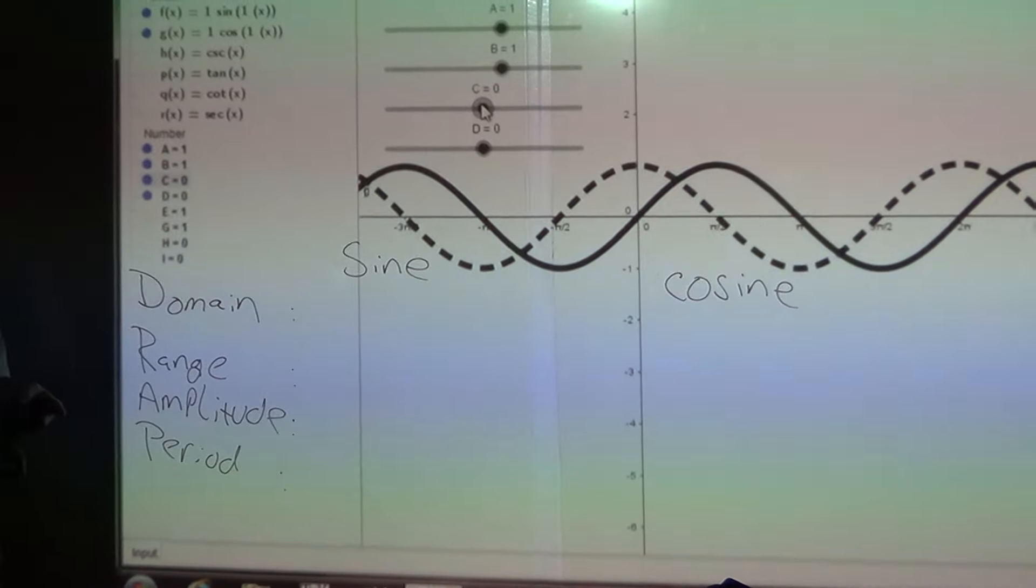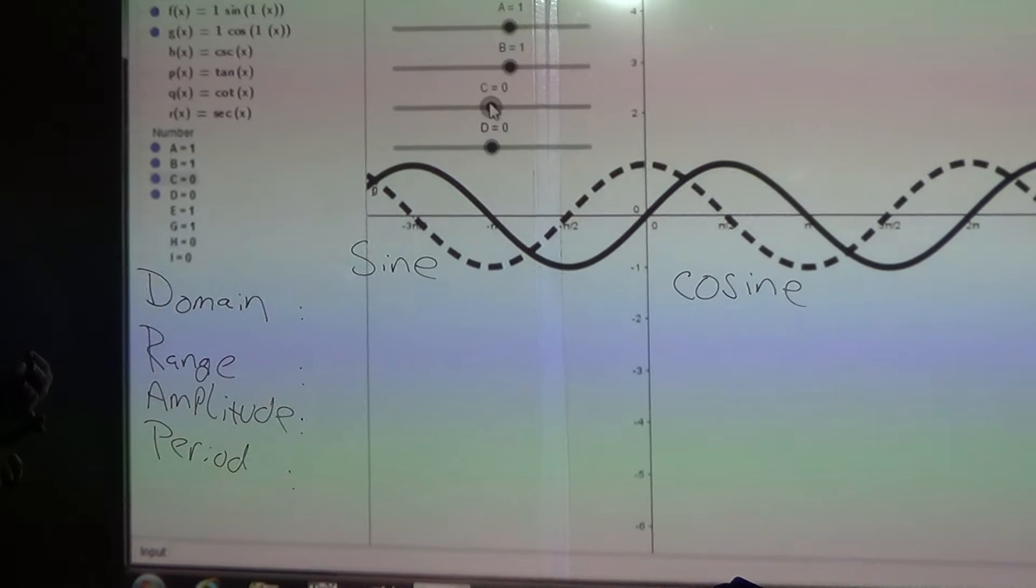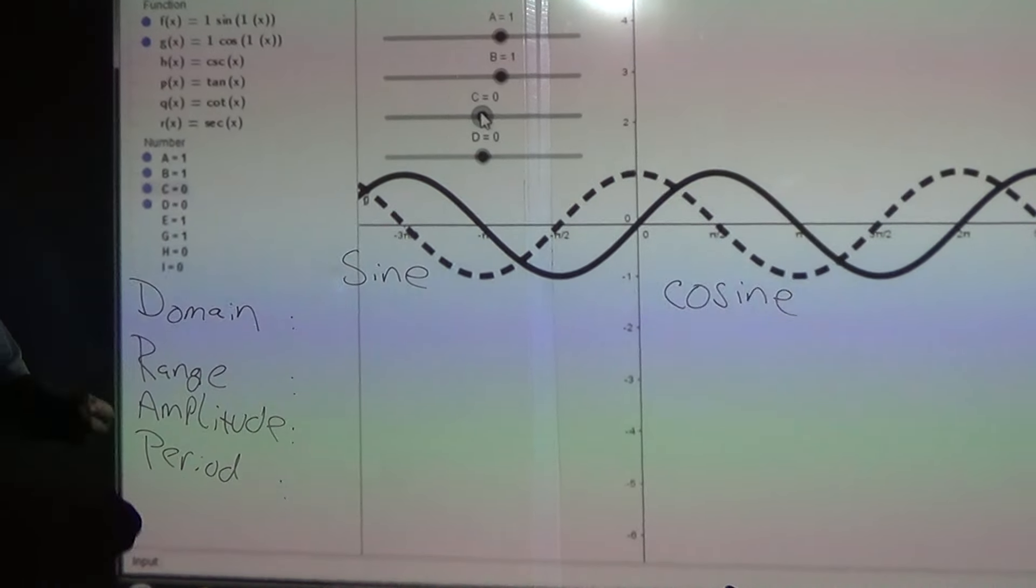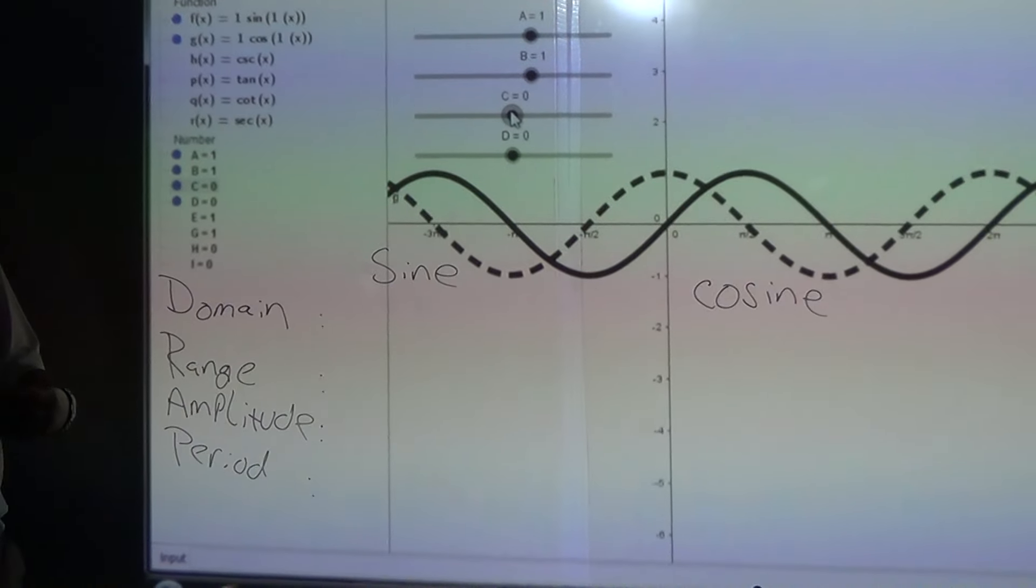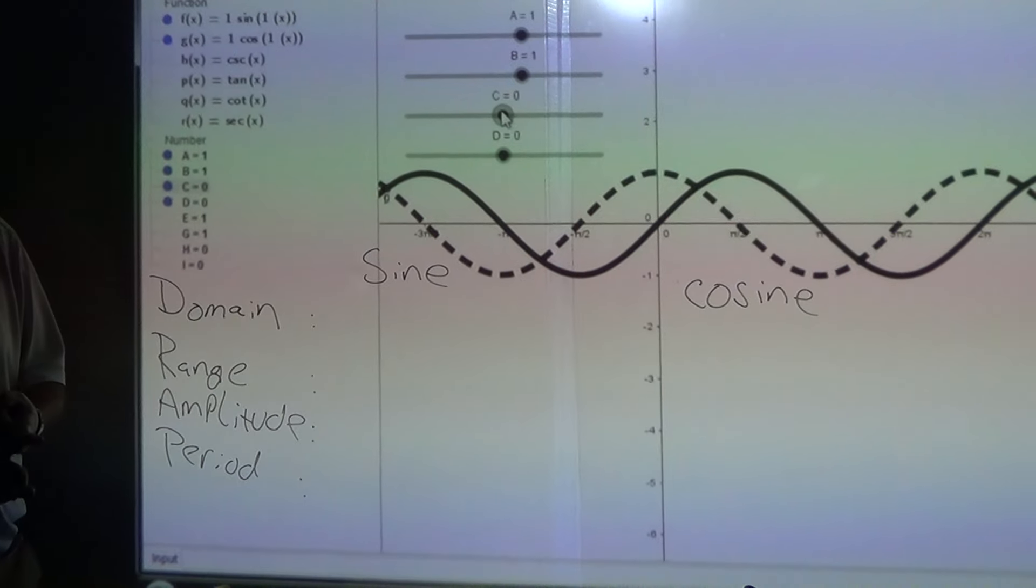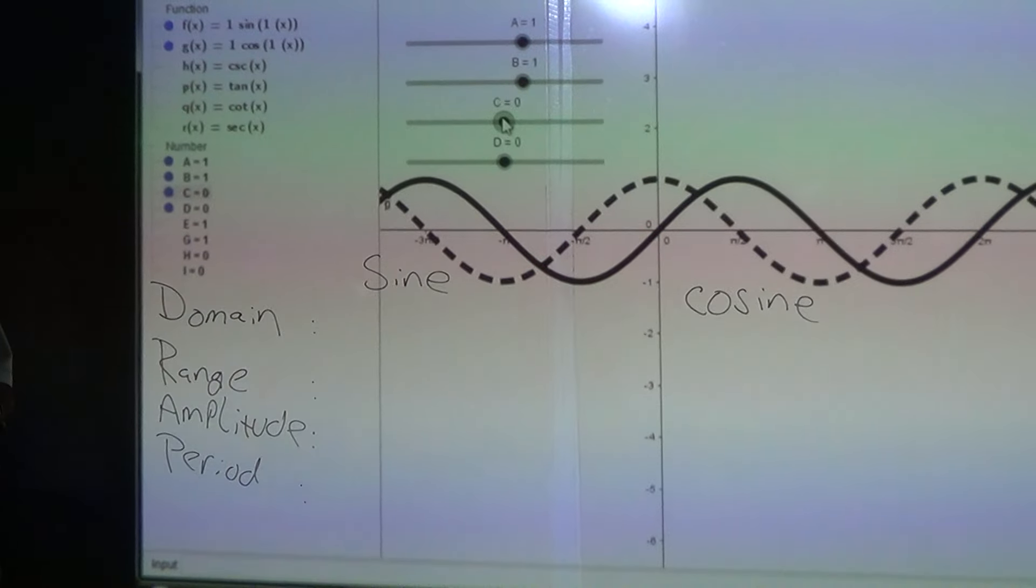We're going to compare the domain, the range, the amplitude, and the period of both sine and cosine. Then we're going to move them around and see if we can make a sine wave into a cosine wave, what translations actually do to the wave, what changes the amplitude, as well as the period.